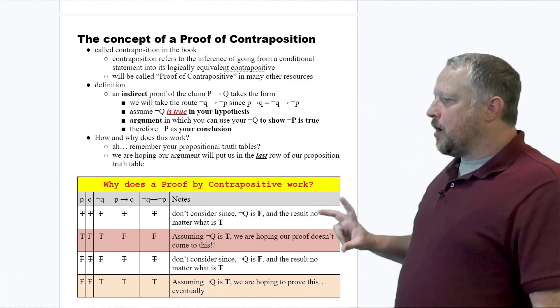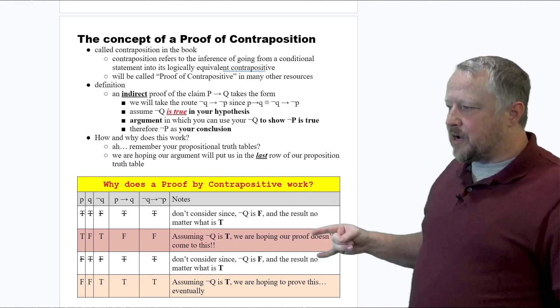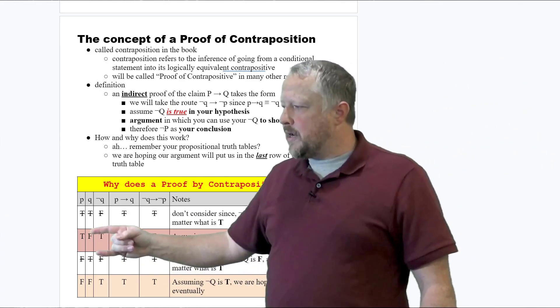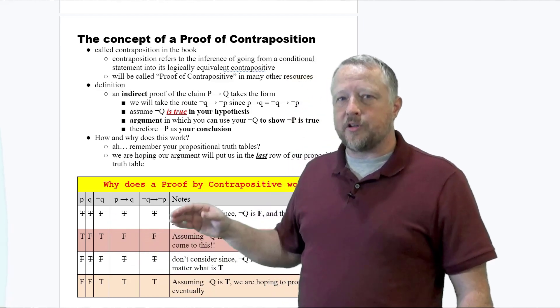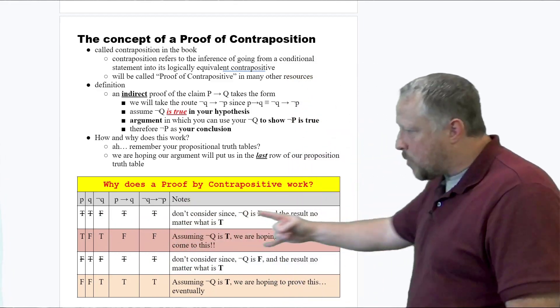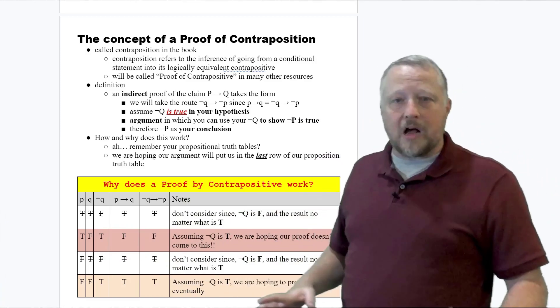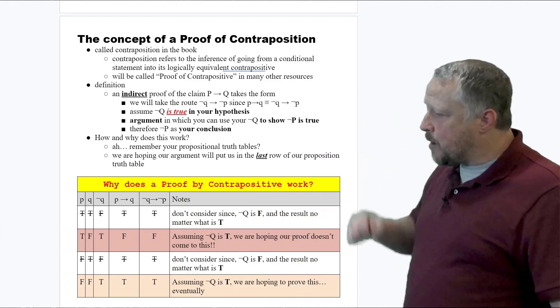I'm going to go to the two white sections here, because frankly, when our negated Q is false, we don't want that situation. We want it to be true, so that's why we can go ahead and eliminate those two possibilities. Now we're left with two left.